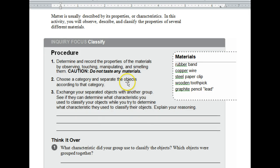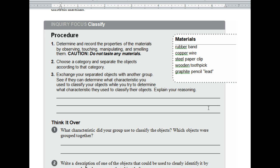So you want to choose a category and separate the objects according to that category. You're going to take these five things and separate them into two groups based on the property that you determine. Exchange your separated objects with another group. See if you can determine what characteristics they used to classify the objects, and then they'll try to determine what characteristics you used. But you need to explain your reasoning based on what they did, what they put in each group.